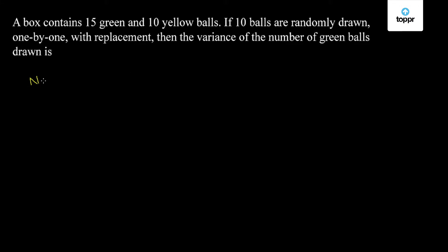Now, number of green balls equals 15 and number of yellow balls equals 10. So probability of drawing a green ball, P, is equal to 15 by 25, since the total number of balls are 25.